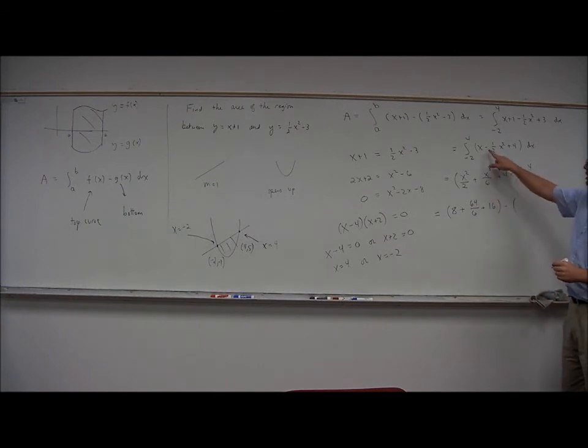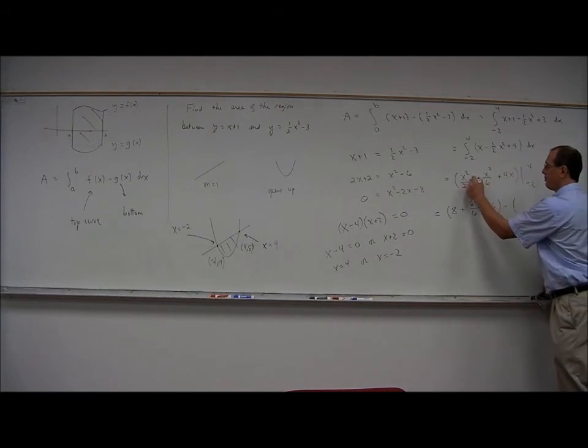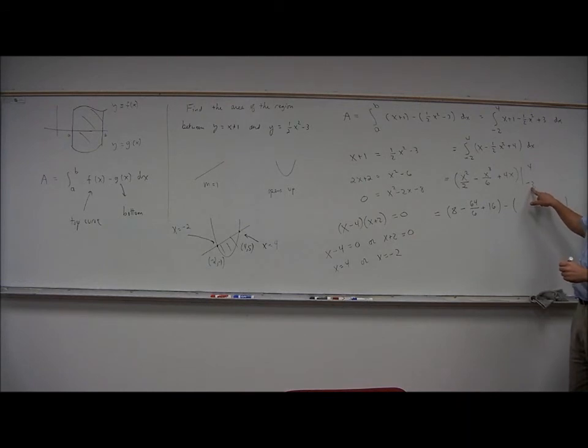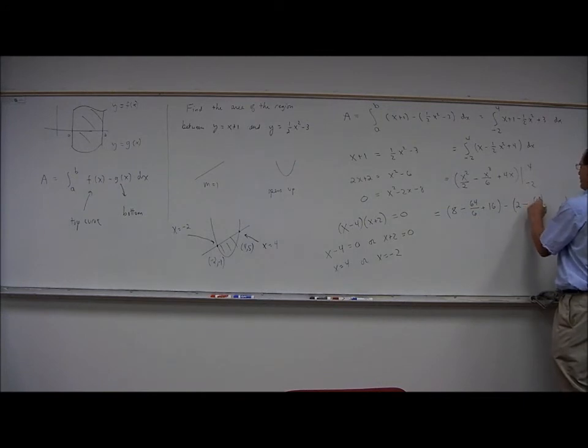I see an error here. That should have been a minus. Minus x cubed over 6, not plus x cubed over 6. Let's fix that. That's minus 64 over 6. Plug in x equals negative 2. We get 4 over 2, which is 2, minus negative 2 cubed is negative 8. So we have here negative 8 over 6, and then plus 4 times negative 2 is negative 8.